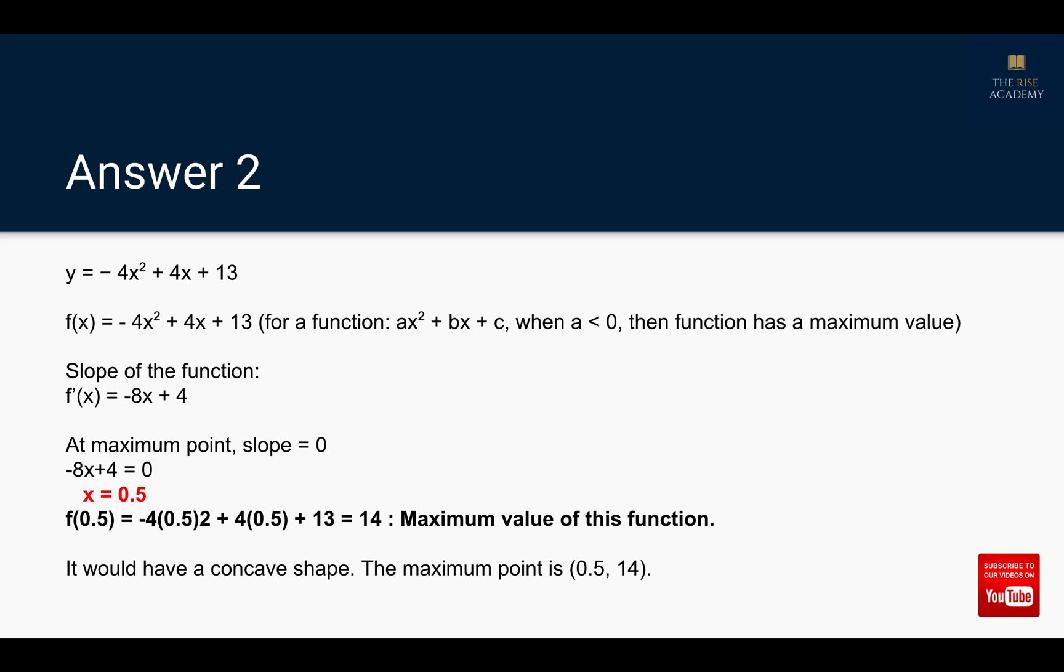Our function is -4x² + 4x + 13, which is in the form of ax² + bx + c. Whenever a is less than 0, the function has a maximum value. Based on that we can say this function will have a maximum value because the coefficient of x² is negative, so we determine it's going to be a maximum value.